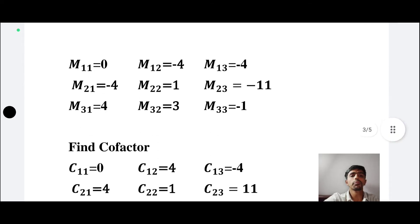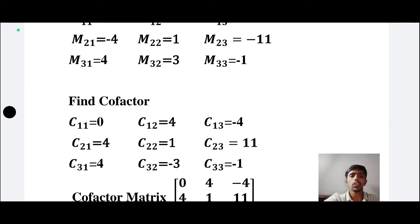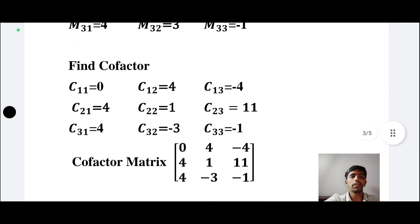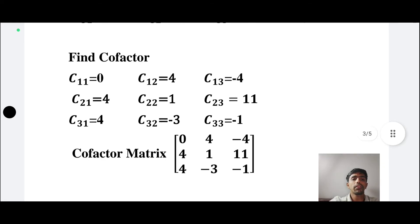Now for the cofactor, C11 is 0, C12 is 4, C13 is minus 4, C21 is 4, C22 is 1, C23 is 11, C31 is 4, C32 is minus 3, C33 is minus 1. The cofactor matrix is: 0, 4, minus 4; 4, 1, 11; 4, minus 3, minus 1.